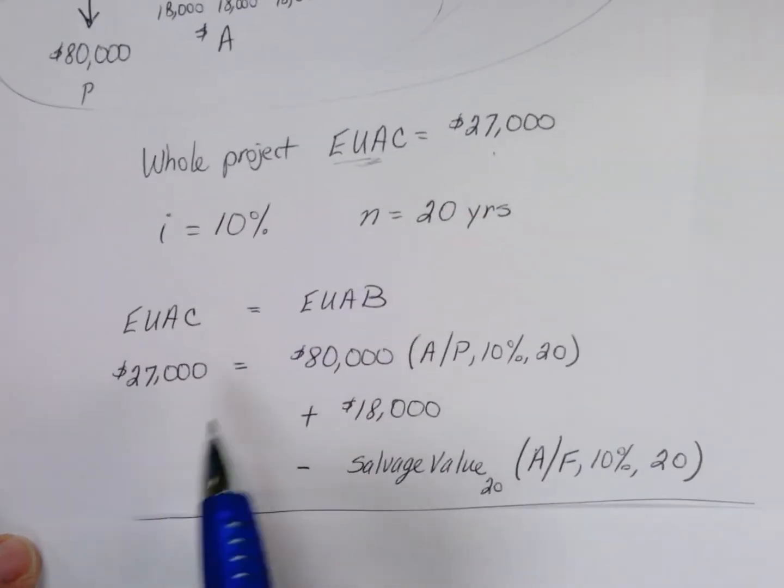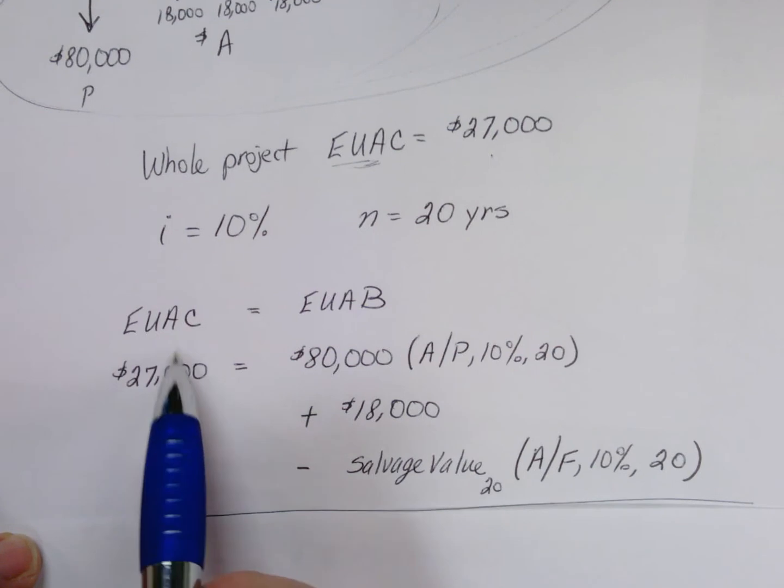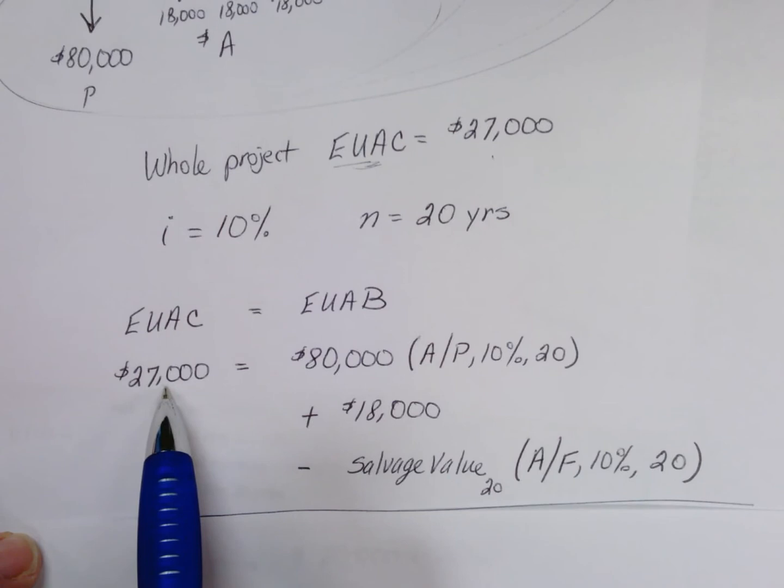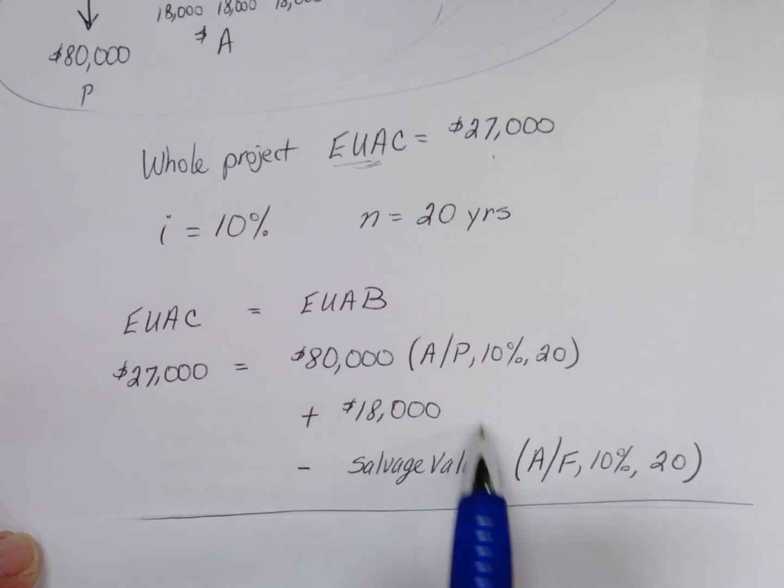We can set this up this way: the equal uniform annual cost that we're trying to average out the whole project to is $27,000, so let's set that on one side of the equation alone and put all the other cash flows on the other side of the equation.